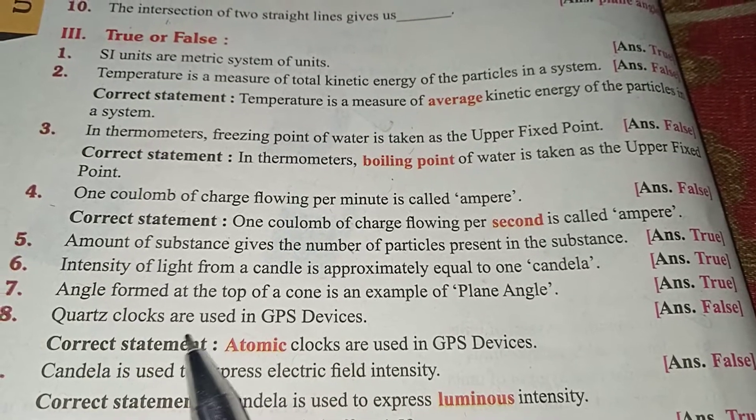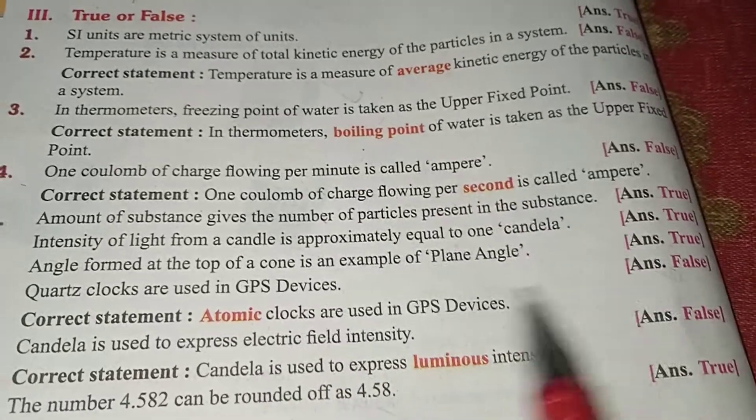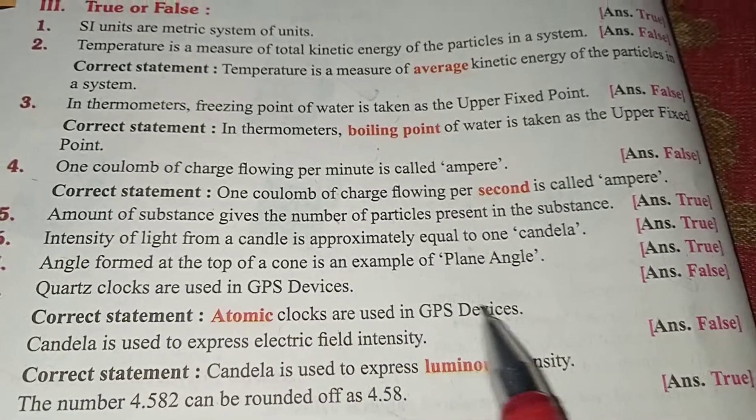Quartz clocks are used in GPS devices. False. Atomic clocks are used in GPS devices.